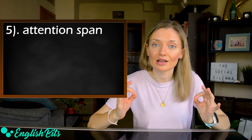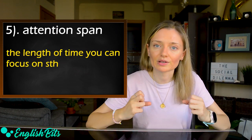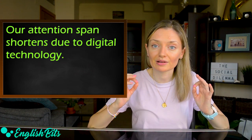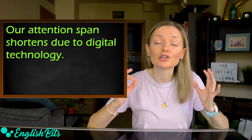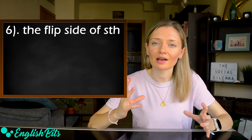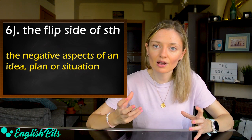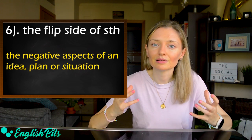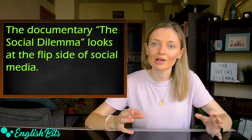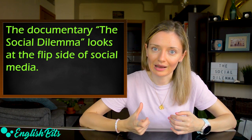Number five: attention span. It's the length of time we can focus on something. For example, our attention span shortens due to digital technology. Number six: the flip side of something. It means the negative aspects of an idea, plan, or situation. For example, the documentary The Social Dilemma looks at the flip side of social media.